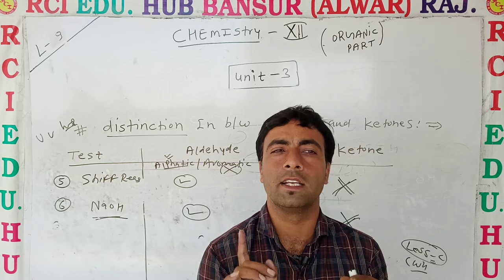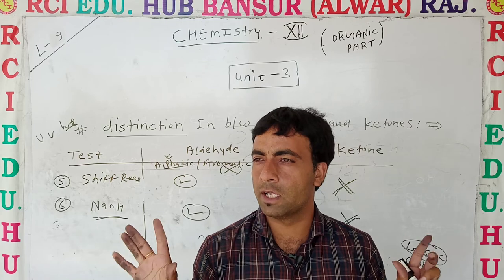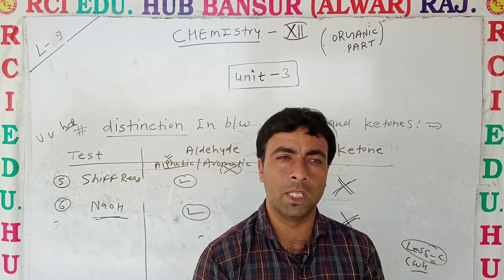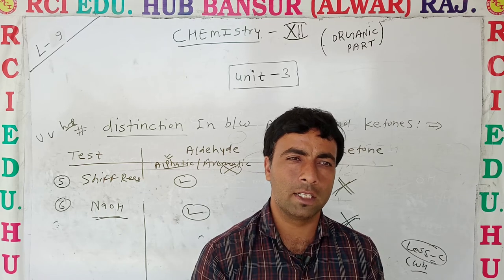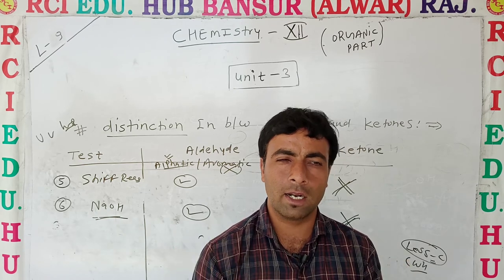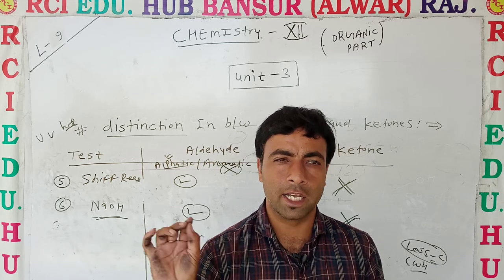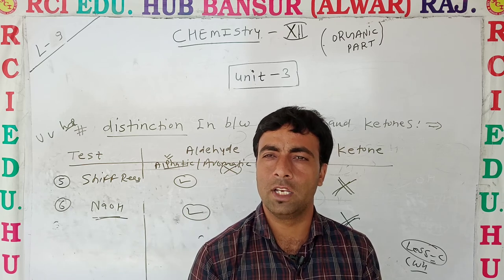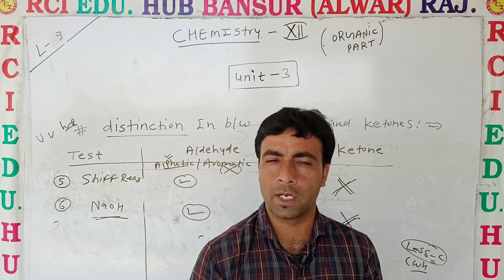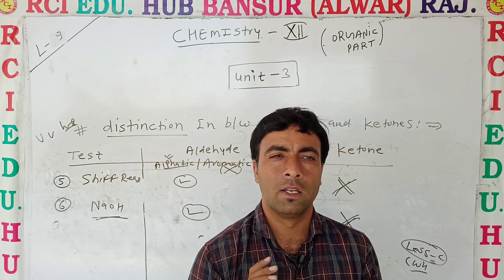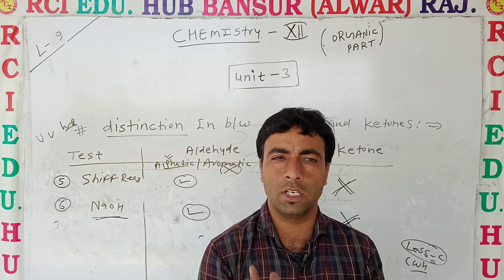This is how to identify aldehydes and ketones. We can easily identify them in the lab. This topic is now complete — carboxylic aldehydes and ketones are complete. Next, we continue with Unit Number 3, Part B, which is Carboxylic Acid. In the next videos, we will start Carboxylic Acid — its methods of preparation, chemical properties. 75% of this unit is now completed, with about 25% on carboxylic groups remaining.